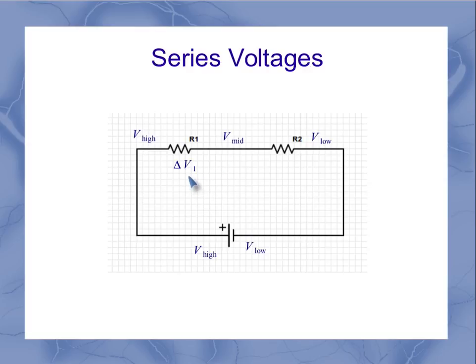If I think about the voltage on resistor 1, it's going to be the difference in the high and the mid potentials. Similarly, the voltage on resistor 2 is going to be the difference between the mid and the low potentials, while my equivalent voltage is going to be the difference between the high and the low.